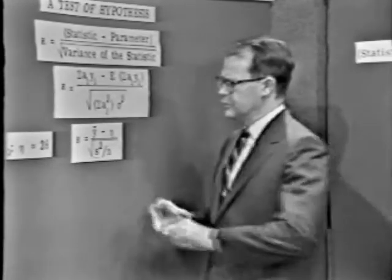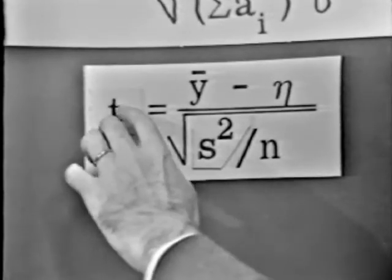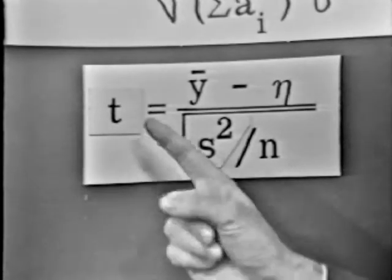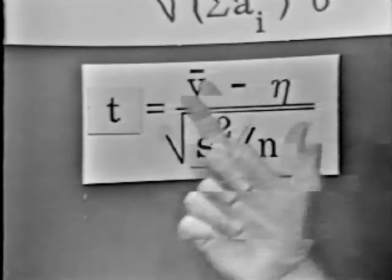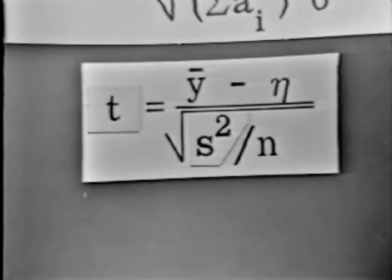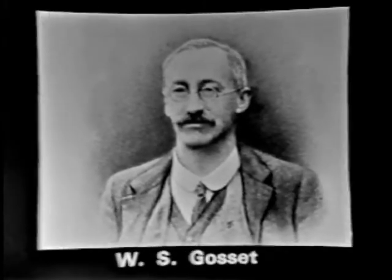What we're going to do is reserve the symbol t for this particular quantity. So this is called the t-statistic. It behooves us to discuss the t-statistic, and particularly to spend a little time talking about the gentleman responsible for studying and deriving that particular statistic. This gentleman's name is W.S. Gossett. The t-distribution, which he was responsible for, does not bear his name — it's called Student's t-statistic.